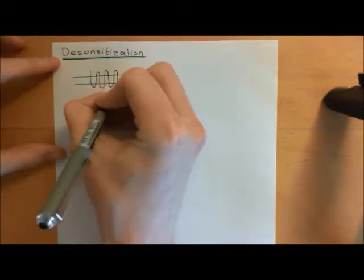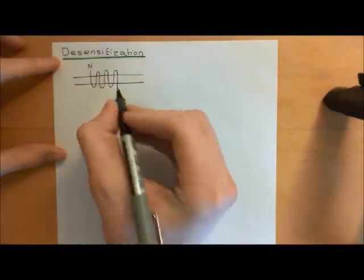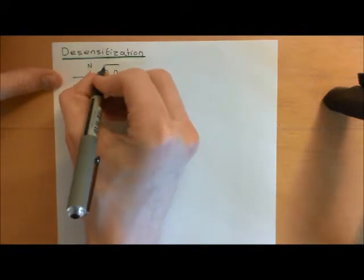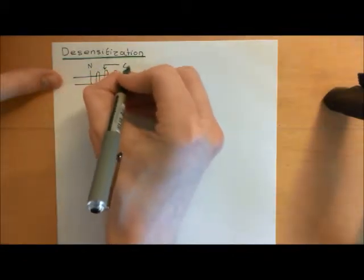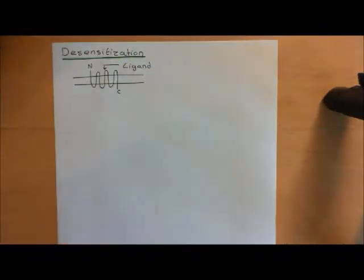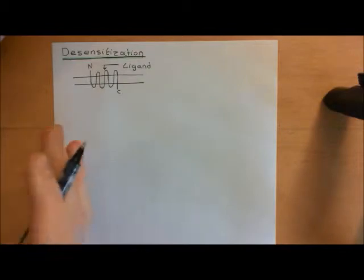Here is our G-protein-coupled receptor with its classical seven membrane-spanning alpha helices. The ligand for this G-protein-coupled receptor is just being applied and applied and applied — we're not removing the ligand from the extracellular fluid. How do we stop this G-protein-coupled receptor activating the GS cascade indefinitely and overstimulating the cell? This doesn't just go for the GS cascade — it goes for all heterotrimeric G-protein cascades.